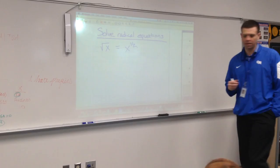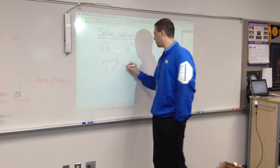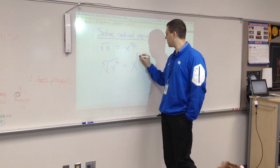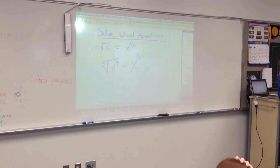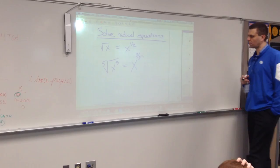If you saw this, the fifth root of x to the third, you could write it as x raised to what power? Three over five, three-fifths. They're the exact same thing. This is just a little bit of algebra review for you with radicals and rational exponents.